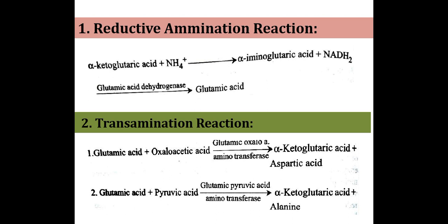The second reaction is transamination. The transfer of an amino group from one amino acid to a keto acid is called transamination. It is catalyzed by a group of enzymes known as aminotransferases. In such a reaction, the amino acid is used for synthesis of glutamic acid, which is then utilized for synthesis of a new amino acid.